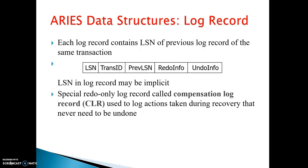In the log record, each log record contains the LSN of the previous log record of the same transaction. The structure contains: LSN, transaction ID, previous LSN number, redo information, and undo information. If any transaction is performed, this information is maintained in the log record. The LSN of the log record may be implicit.